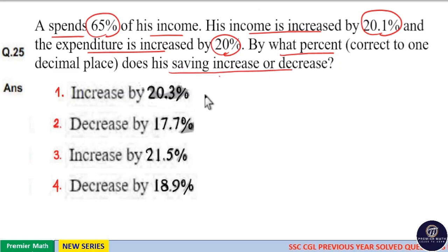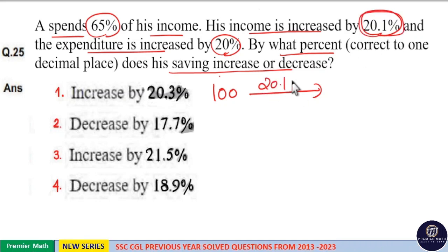Here, consider 100 rupees as his initial income. Now, income is increased by 20.1%, means 20.1% of 100 is 20.1. So, income is increased to 120.1 rupees.